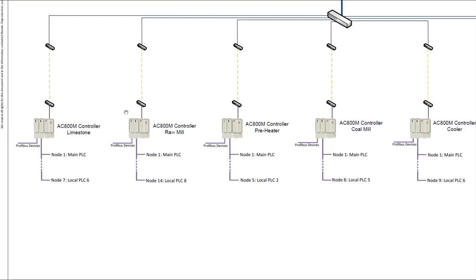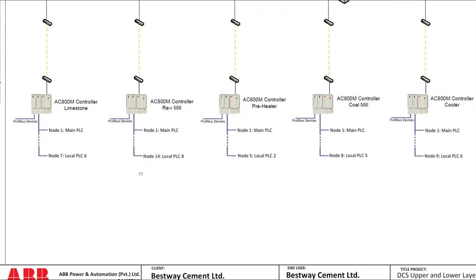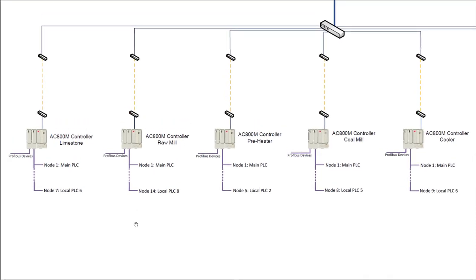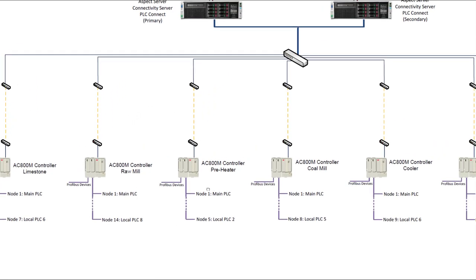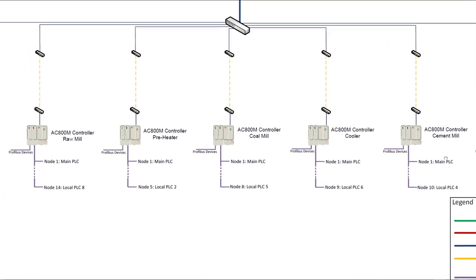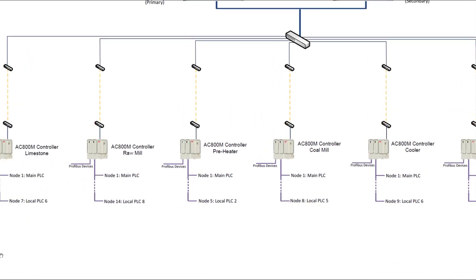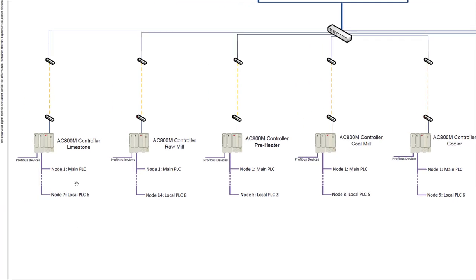Similarly, we have another area, and all the sensors and actuators of that area will be interfaced with its PLC, and so on and so forth. Below the PLC level, we have the field level. The field level has sensors, actuators, induction motors, and various equipment that are being operated and monitored by these PLCs. The field level is the most basic level in a typical DCS architecture.